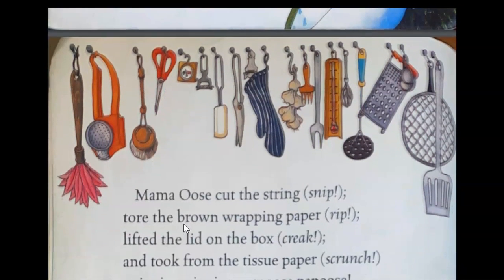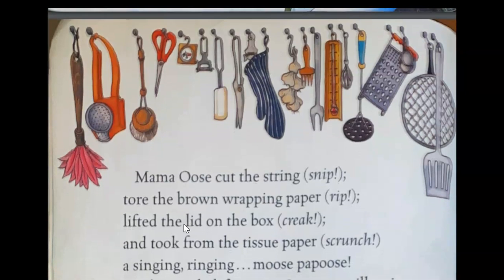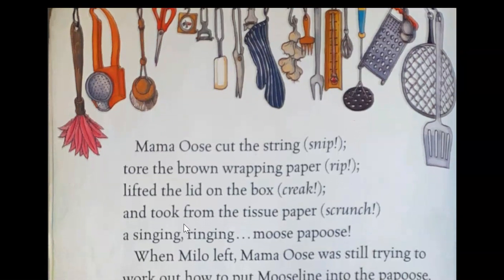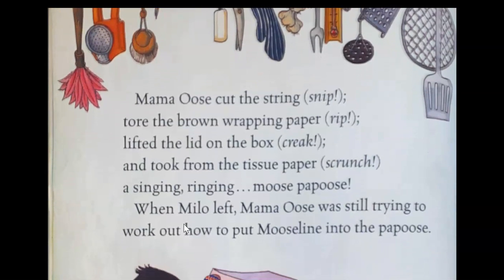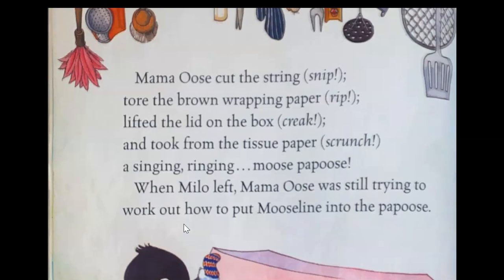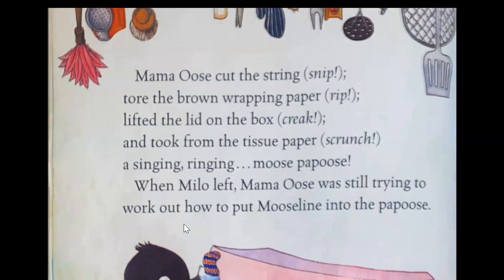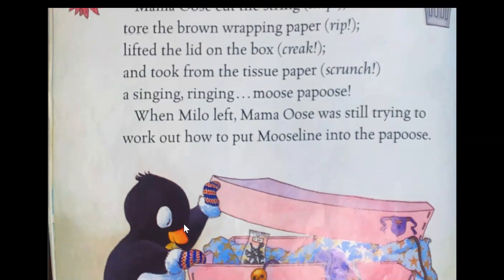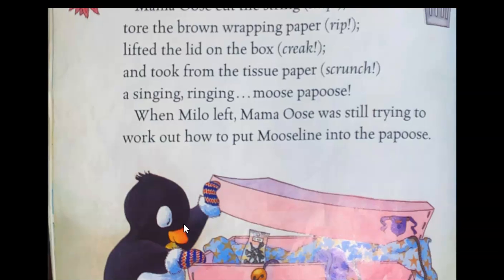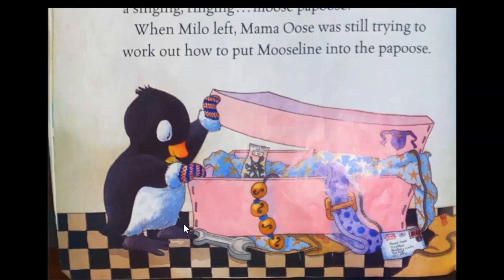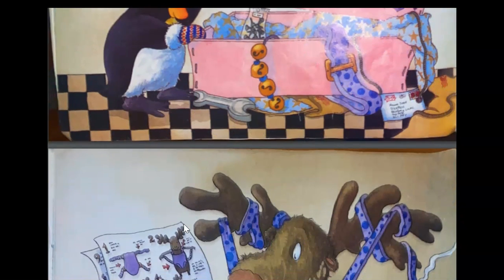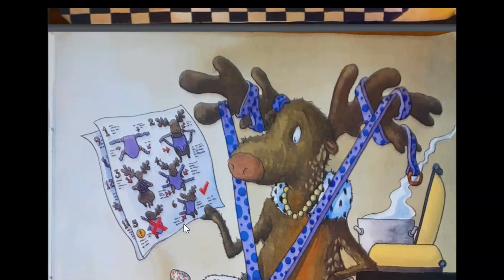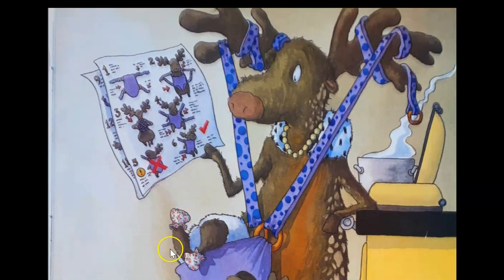Mama Oos cut the string—snip, tore the brown wrapping paper—rip, lifted the lid on the box—creak, and took from the tissue paper—scrunch, a stinging ringing moose papoose. When Milo left, Mama Oos was still trying to work out how to put Moose Line into the papoose. So it looks like it's a way to hold your baby.